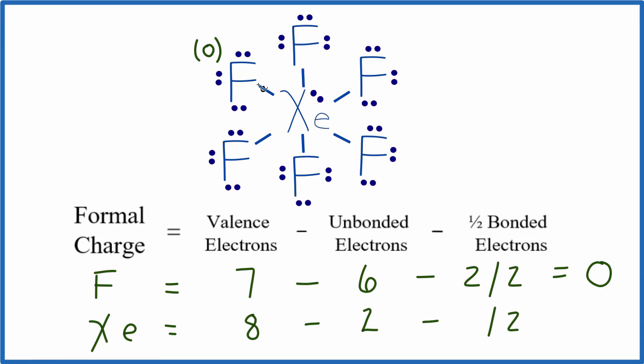So let's count the bonds, 2, 4, 6, 8, 10, 12 unbonded valence electrons.